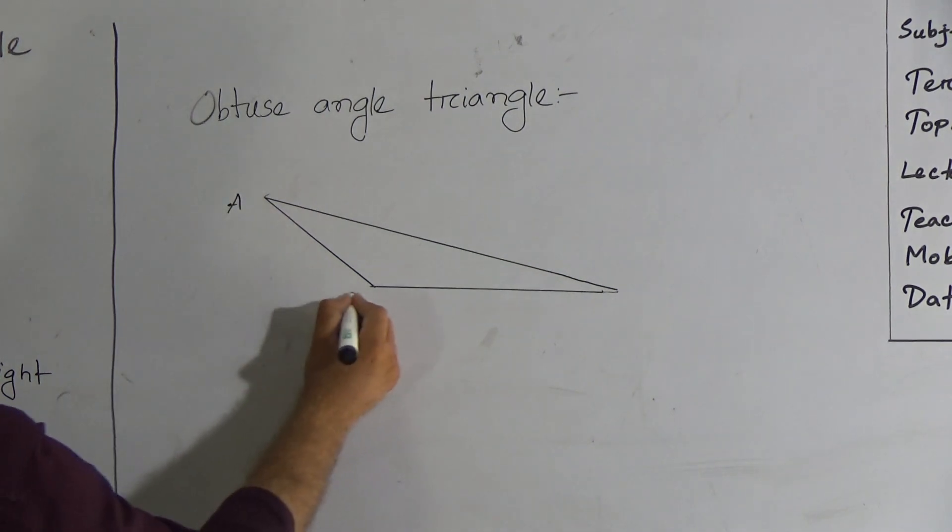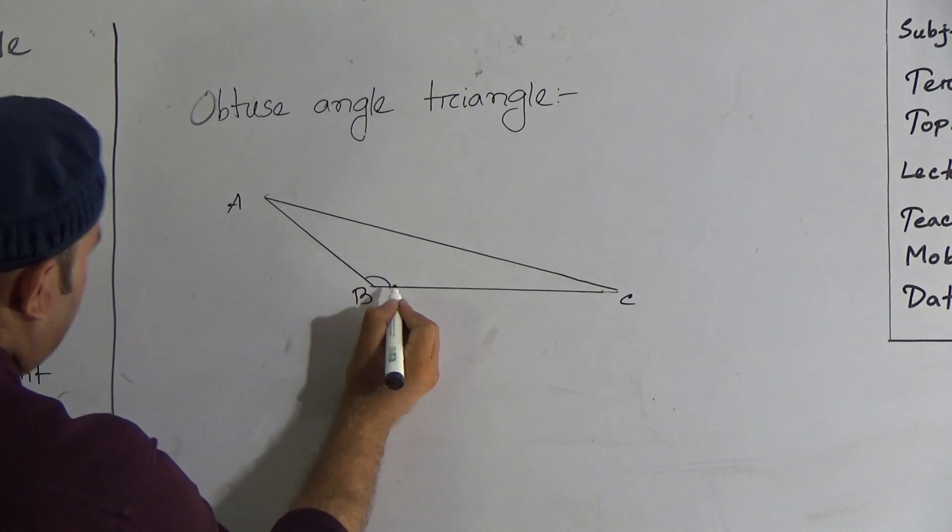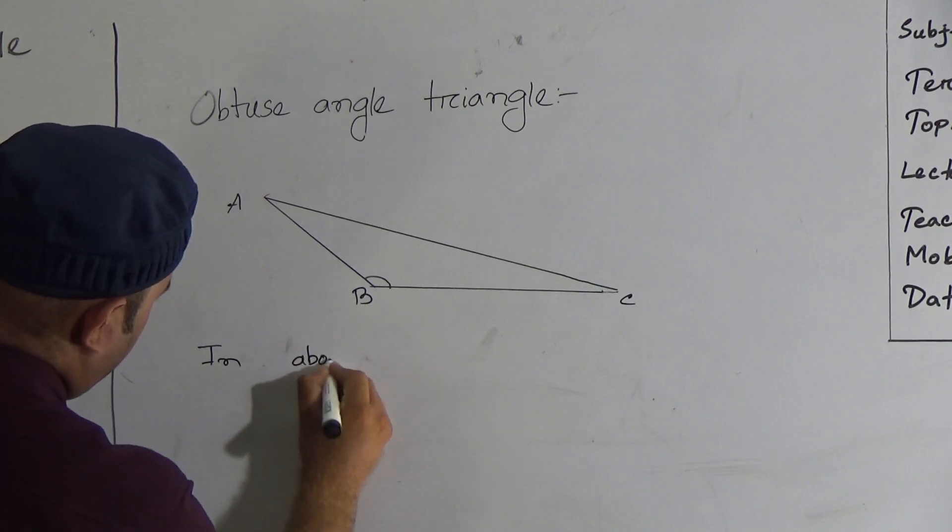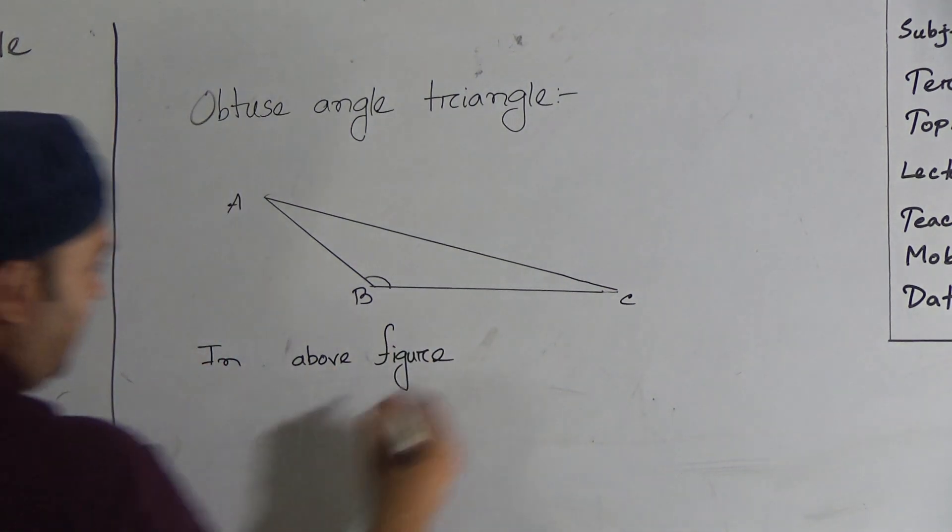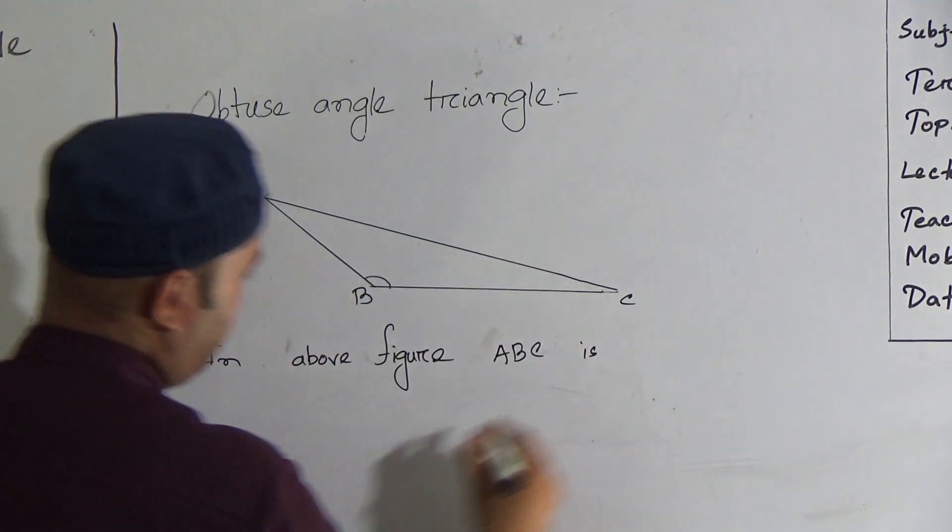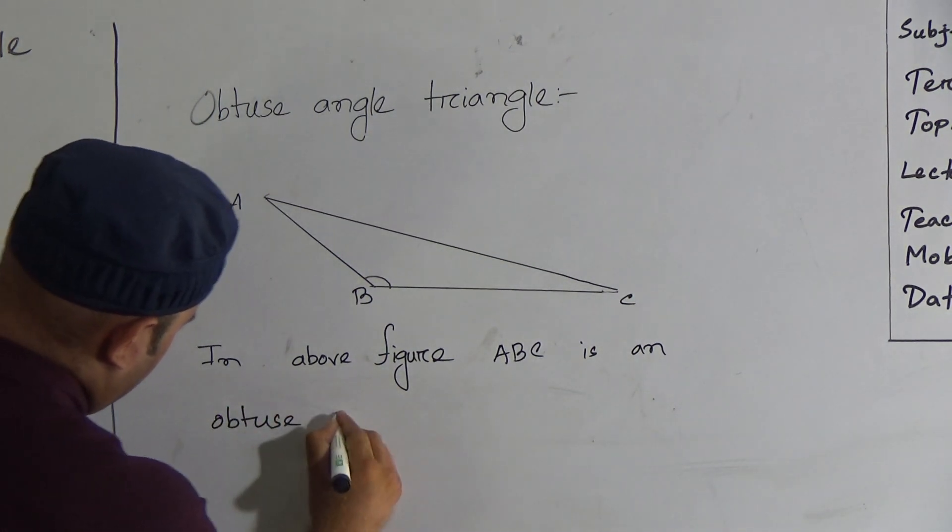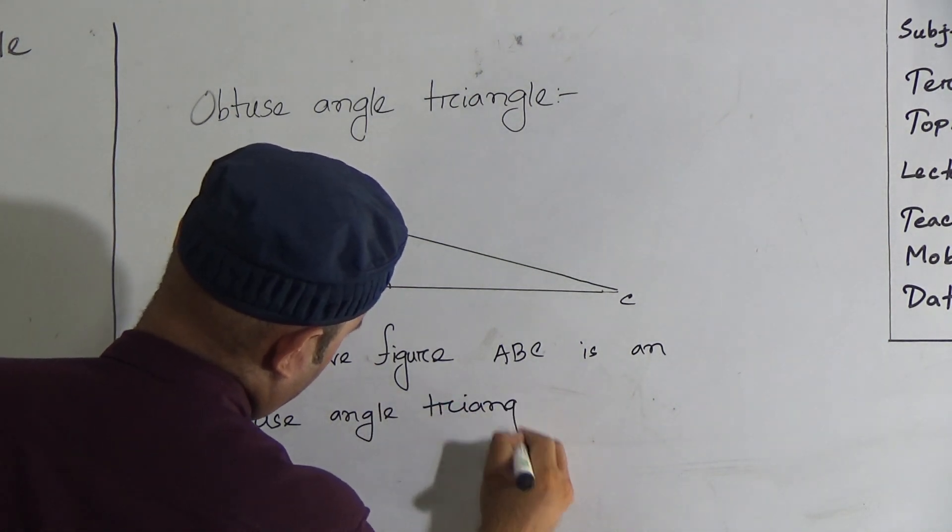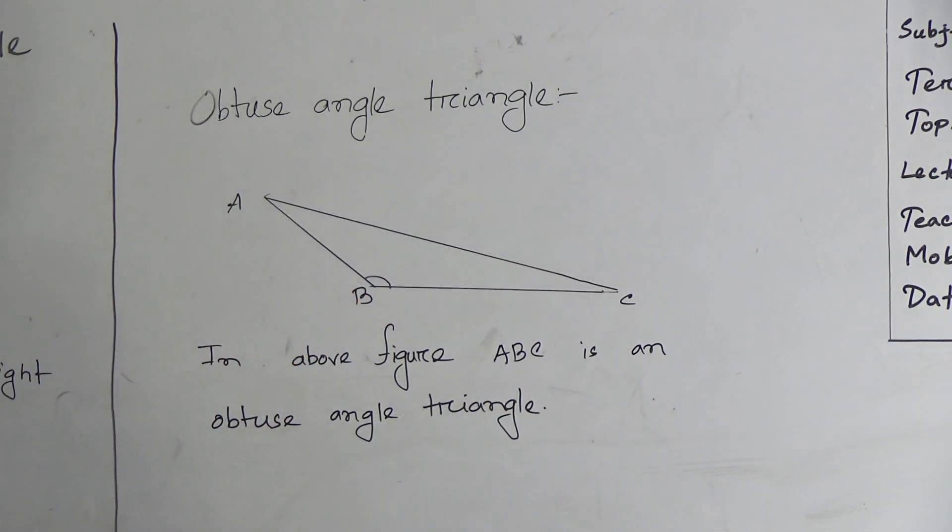Here is A, B, C. This is an obtuse angle triangle. Now, in above figure, ABC is an obtuse angle triangle. This is an obtuse angle triangle.